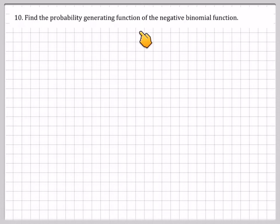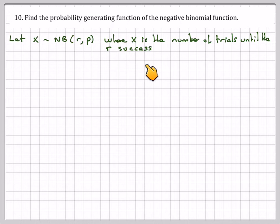Find the probability generating function of the negative binomial function. Let X be negative binomial r, p, where X is the number of trials until r successes.